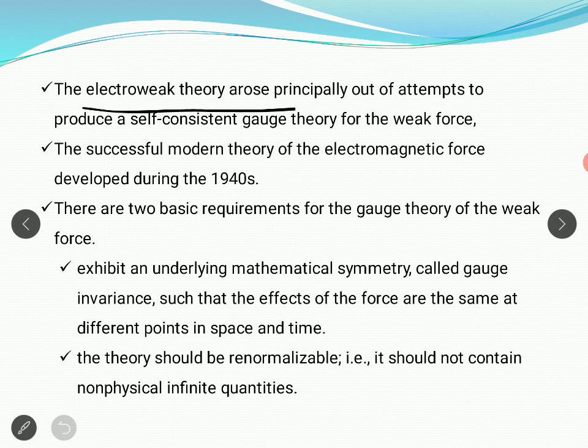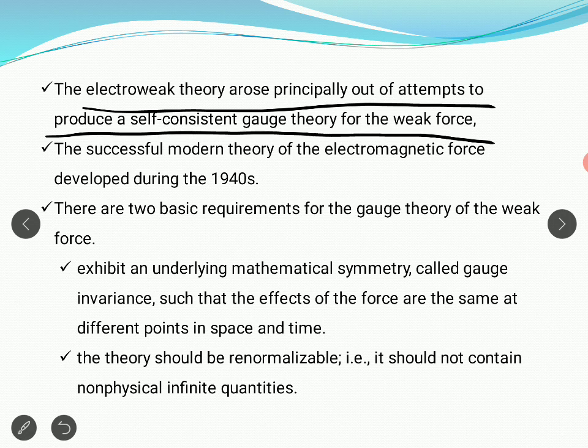The electroweak force principally arose out of attempts to produce a self-consistent gauge theory for the weak force. Gauge theory has its origins in the late 1800s, when Maxwell's equations were formulated — gauge theory was implemented there. So gauge theory is not something used only in particle physics; it is also implemented in electromagnetism. When it was applied to the weak force, it was seen that even the combined electroweak theory remained valid. I am going to explain the basic idea of gauge theory in the next slide.